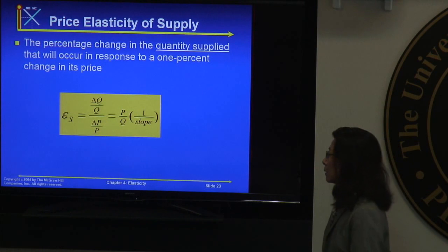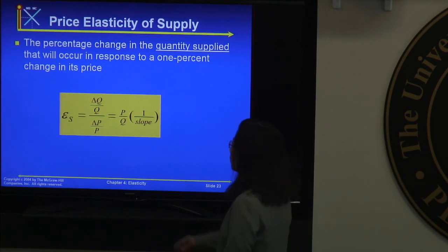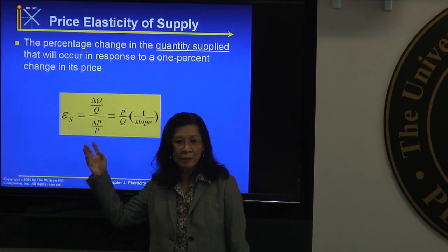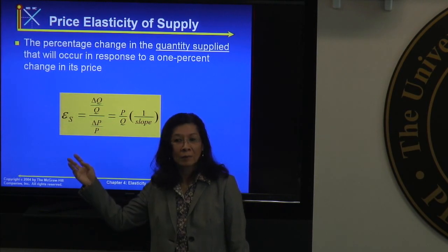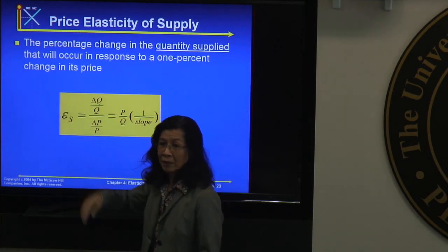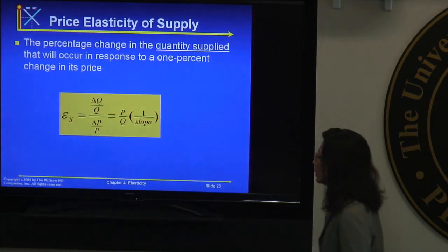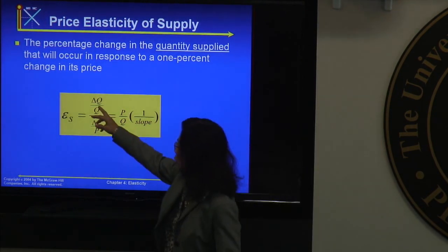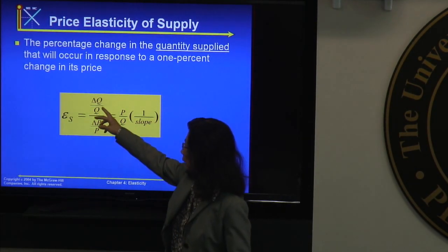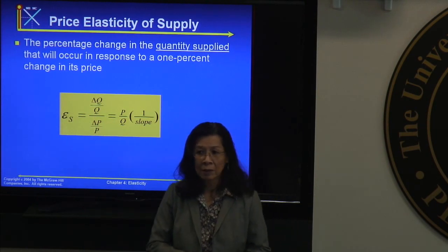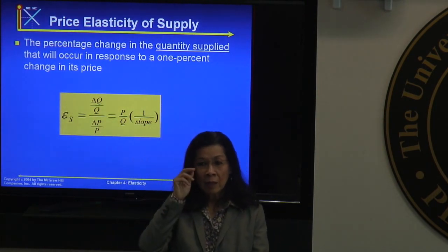The formula for price elasticity of supply is the percentage change in quantity divided by the percentage change in price — or equivalently, the reciprocal of the slope times P over Q.